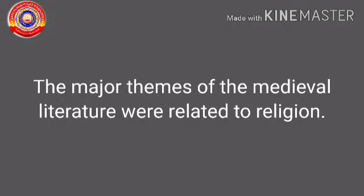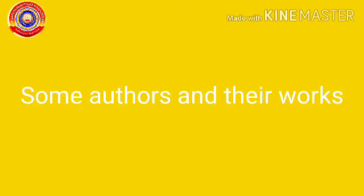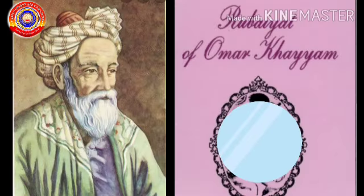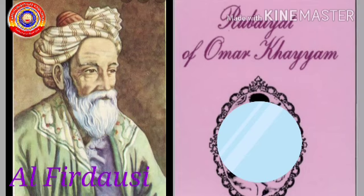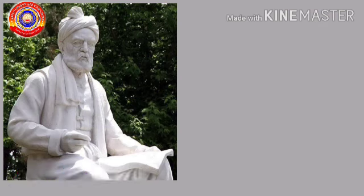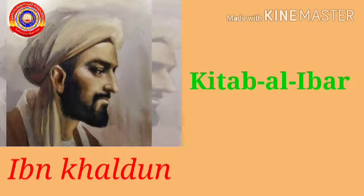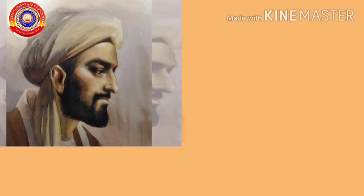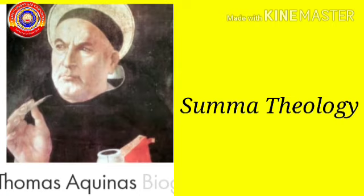The major themes of medieval literature were related to religion. Some notable authors and their works from this period: Omar Khayyam wrote the Rubaiyat; Al-Firdausi wrote the Shahnameh; Ibn Khaldun wrote Kitab al-Ibar; Thomas Aquinas wrote Summa Theologica.